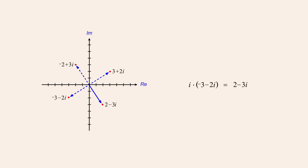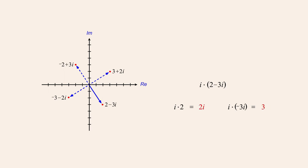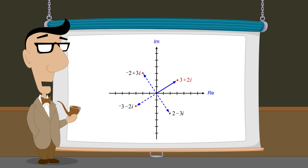If we continue this process by taking that result, 2 minus 3i, and multiply a fourth time by i, we get i times 2, or 2i, and i times negative 3i, which is negative 3i-squared, or negative 3 times negative 1, which is positive 3. The result is therefore 3 plus 2i, bringing us back to the original vector. We could go on like this forever, with the same rotating cycle repeating every four multiplications by i.